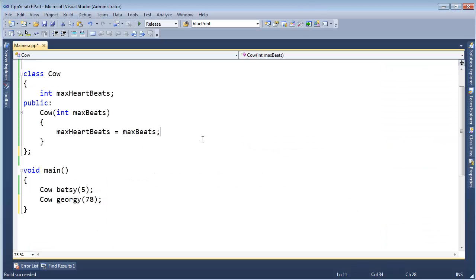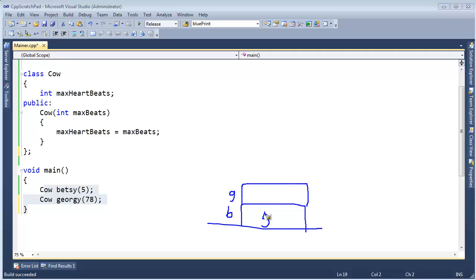Let me go to C++, and I've modified the example a little bit. I have my cow, and when I create a cow, there's a maximum number of heartbeats, just like we had before, and the constructor takes the maximum beats, and we store that away. So I make Betsy and Georgie. Let me just illustrate again. Here's the stack, and there's stuff before this, obviously, when we get here, but here's Betsy. This is the Betsy object, and here's Georgie.